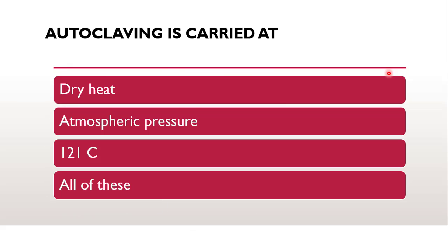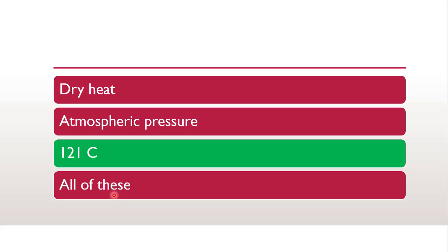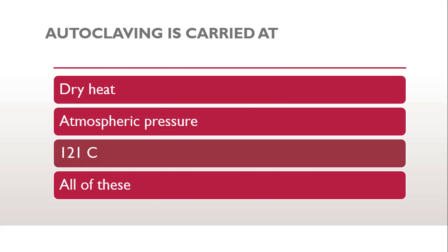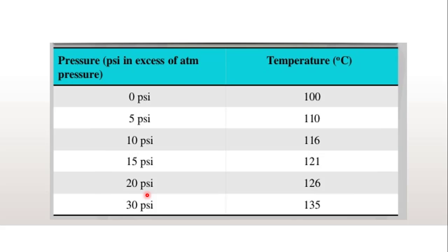The next question says: autoclaving is carried out at — dry heat, atmospheric pressure, 121°C, or all of these? The correct answer is 121°C. Autoclaving is carried out at 121°C and 15 psi pressure. When the temperatures are varied, the pressure will also vary.